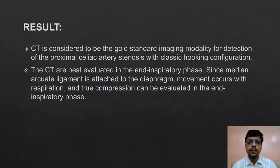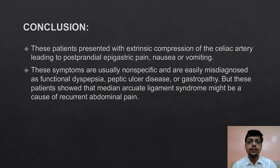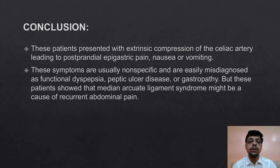CT is considered the gold standard imaging modality for detection of proximal celiac artery stenosis with classic hooking configuration. CTs are best evaluated in the end inspiratory phase since the Median Arcuate Ligament is attached to the diaphragm; movement occurs with respiration and true compression can be evaluated in the end inspiratory phase. The patients presented with extensive compression of the celiac artery leading to postprandial epigastric pain, nausea and vomiting. These symptoms are usually nonspecific and easily misdiagnosed as functional dyspepsia, peptic ulcer disease, or gastropathy, but these patients showed that Median Arcuate Ligament Syndrome might be the cause of their recurrent abdominal pain.